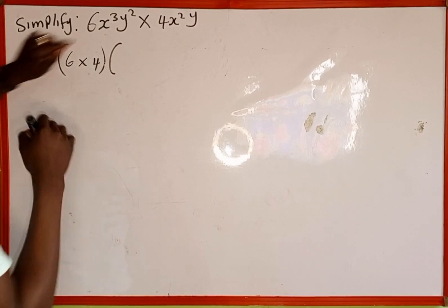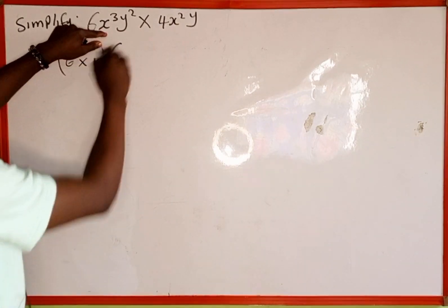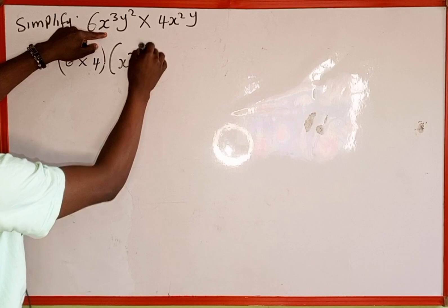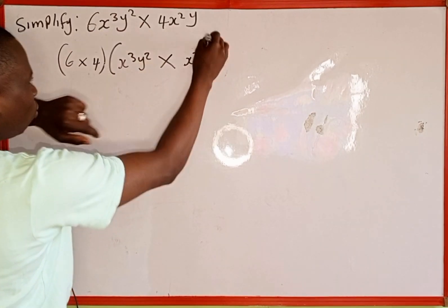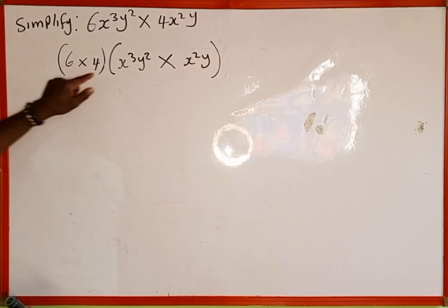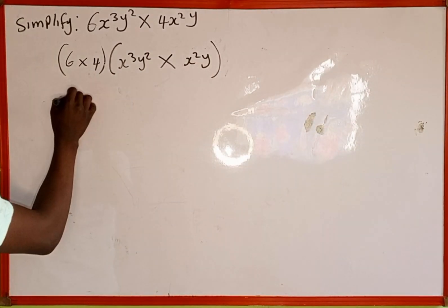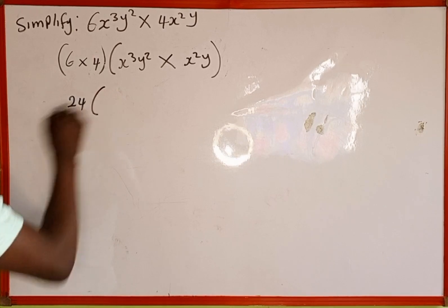Then we multiply the remaining variables: x³y² × x²y. Next, we multiply 6 by 4, which gives us 24. Then we open the bracket.